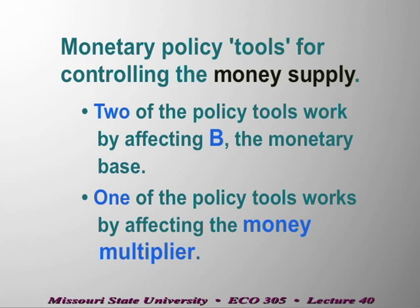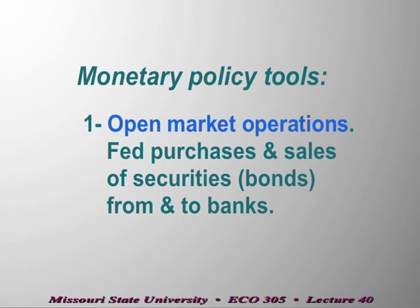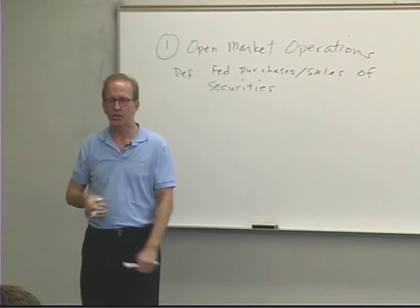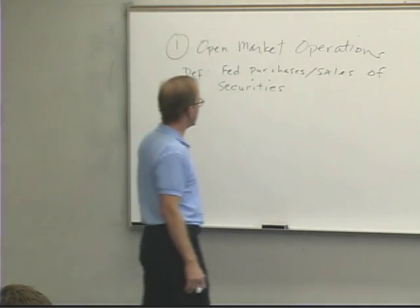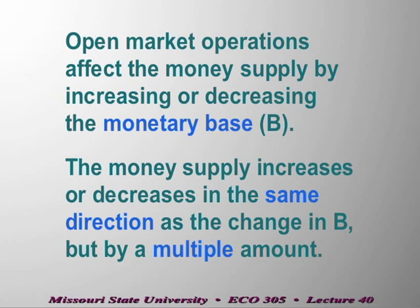We always have to be able to say, if the Federal Reserve has a policy that affects the money supply, does it affect the monetary base or does it affect the M1 multiplier? The first policy, and by far the most important one, is called open market operations. The definition: Fed purchases or sales of securities, usually from banks — it doesn't have to be from banks, but typically it would be. This affects the monetary base.